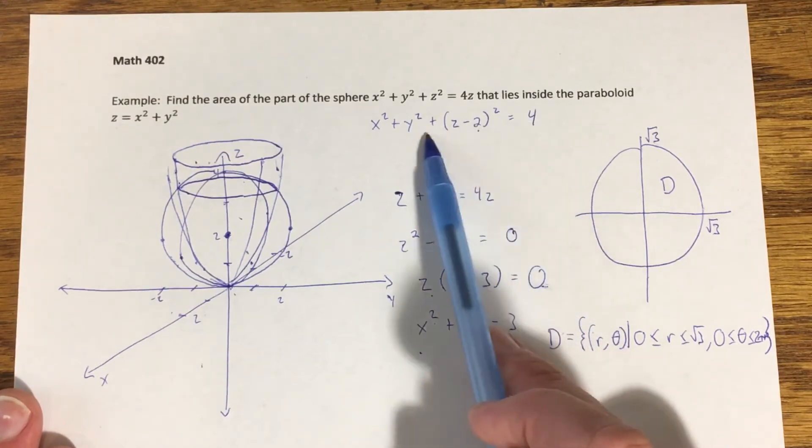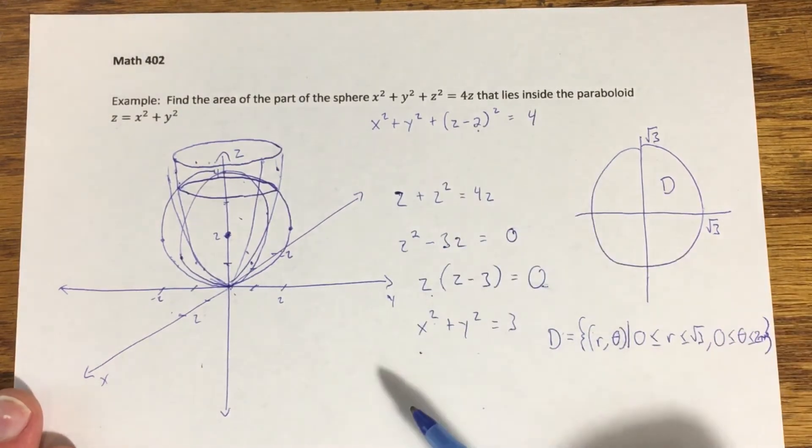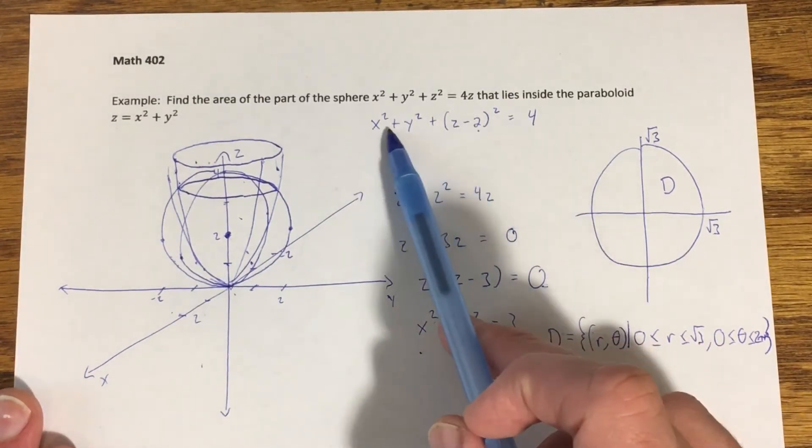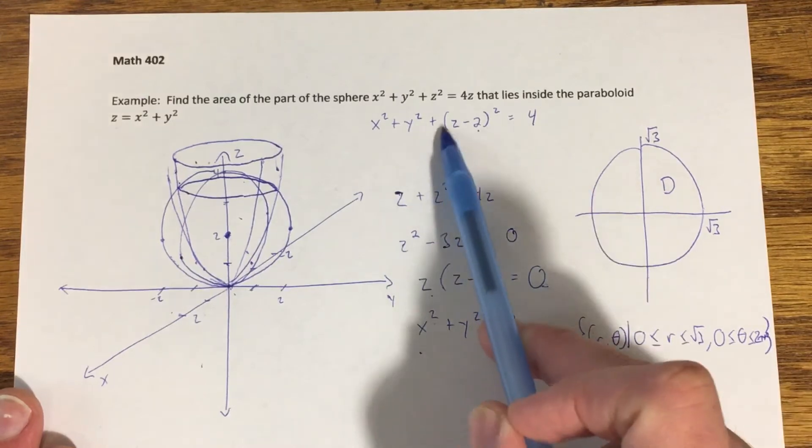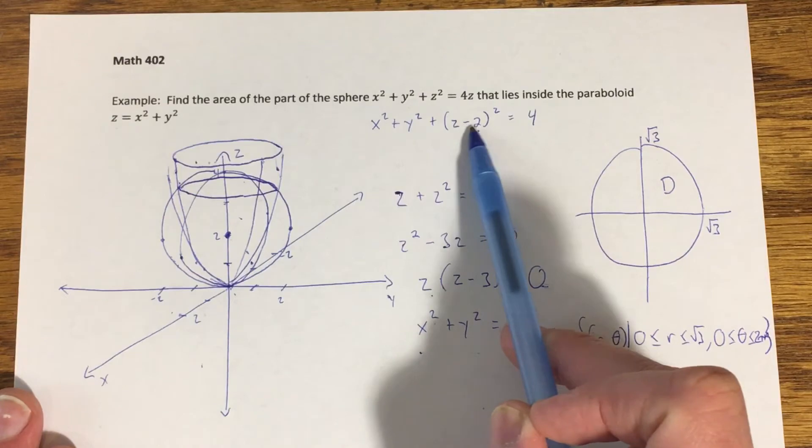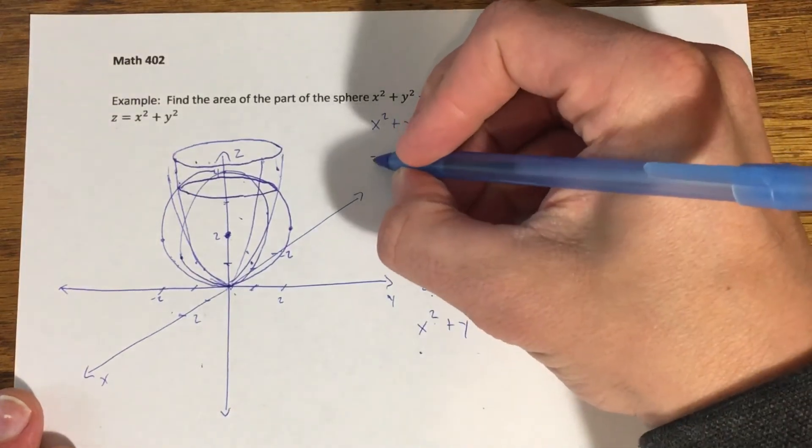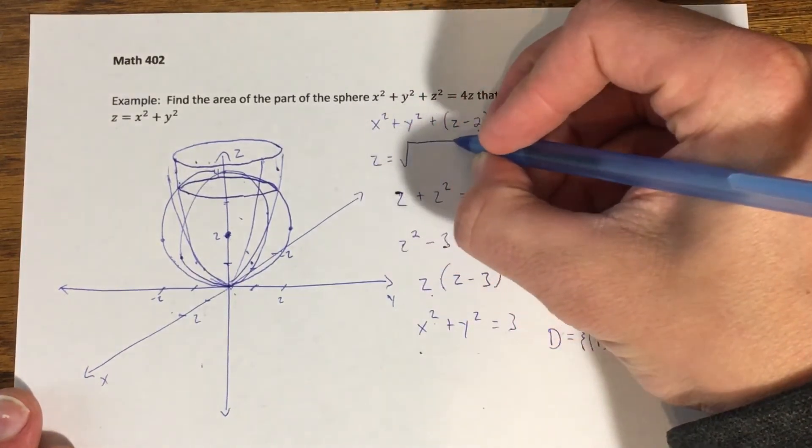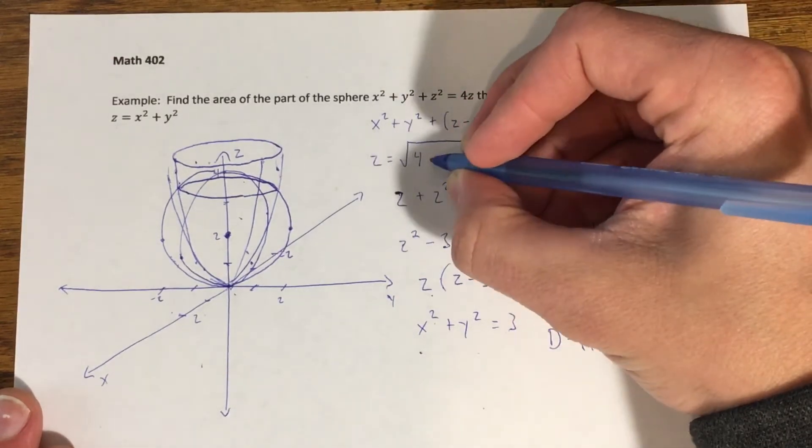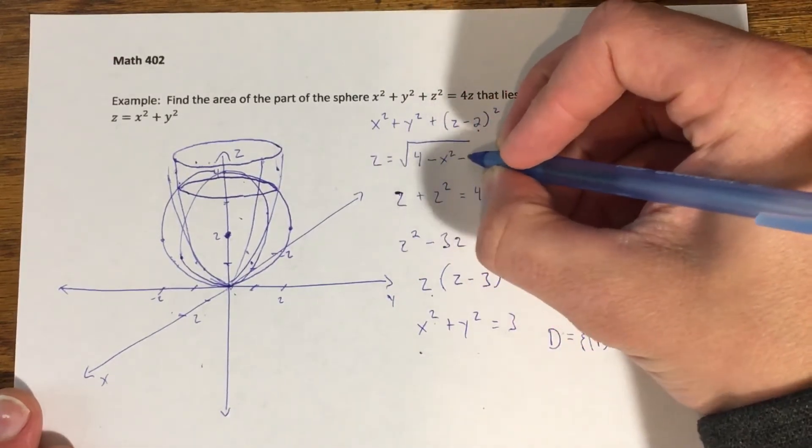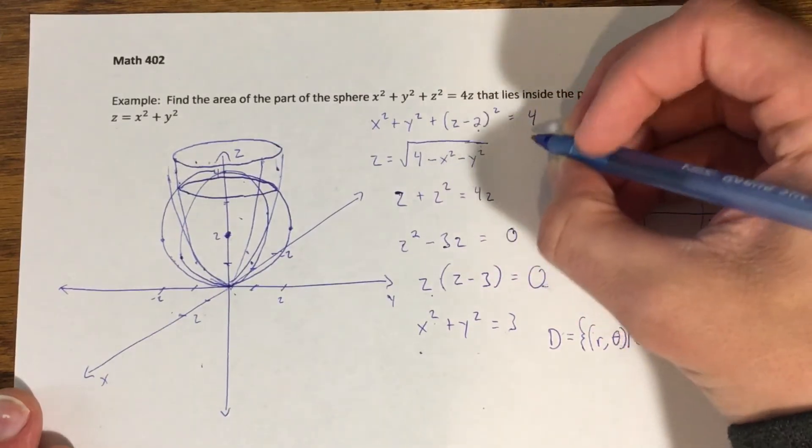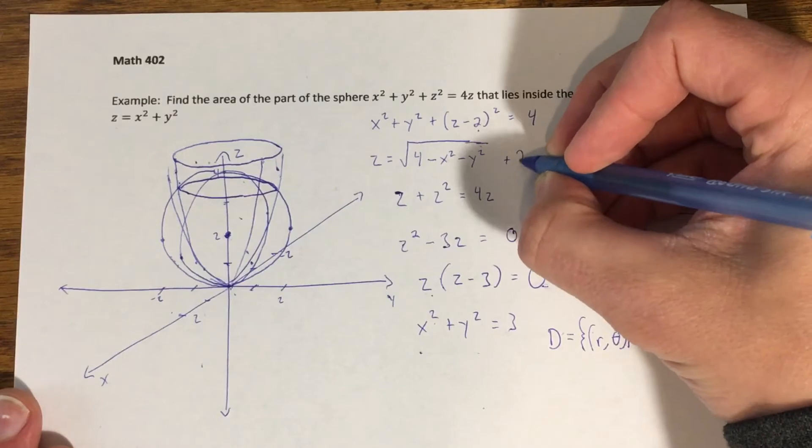I need to isolate that z so I can represent z as a function of x and y. I'll talk through a couple of algebraic steps. I can subtract the x squared and y squared over, take square roots of both sides, and then add the two. That's going to give me z equals the square root of four minus x squared minus y squared, and when I add the two that's going to be outside the radical.